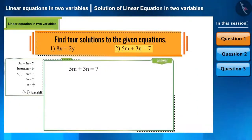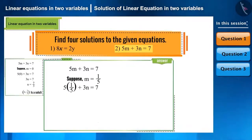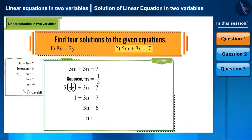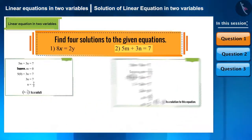Now, let's keep the value of m as 1 by 5 and find the solution of the equation. On solving the equation, we obtain the value of n as 2. Hence, (1/5, 2) is the second solution to the given equation.